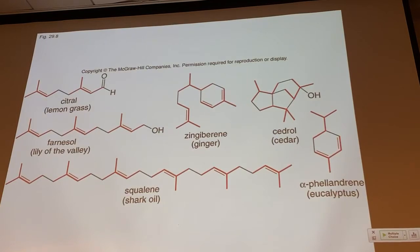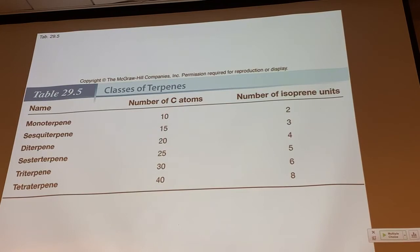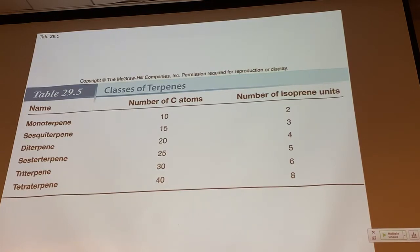Terpenes can be classified by the number of isoprene units present. The smallest class, the monoterpene, contains two isoprene units — which seems unusual but reflects the smallest terpene. A diterpene has four isoprenes, and a triterpene has six. Those with three and five isoprenes have unusual names: sesquiterpene and sesterterpene. You don't need to memorize these names for class, but they appear frequently in the organic chemistry literature and are helpful to recognize.